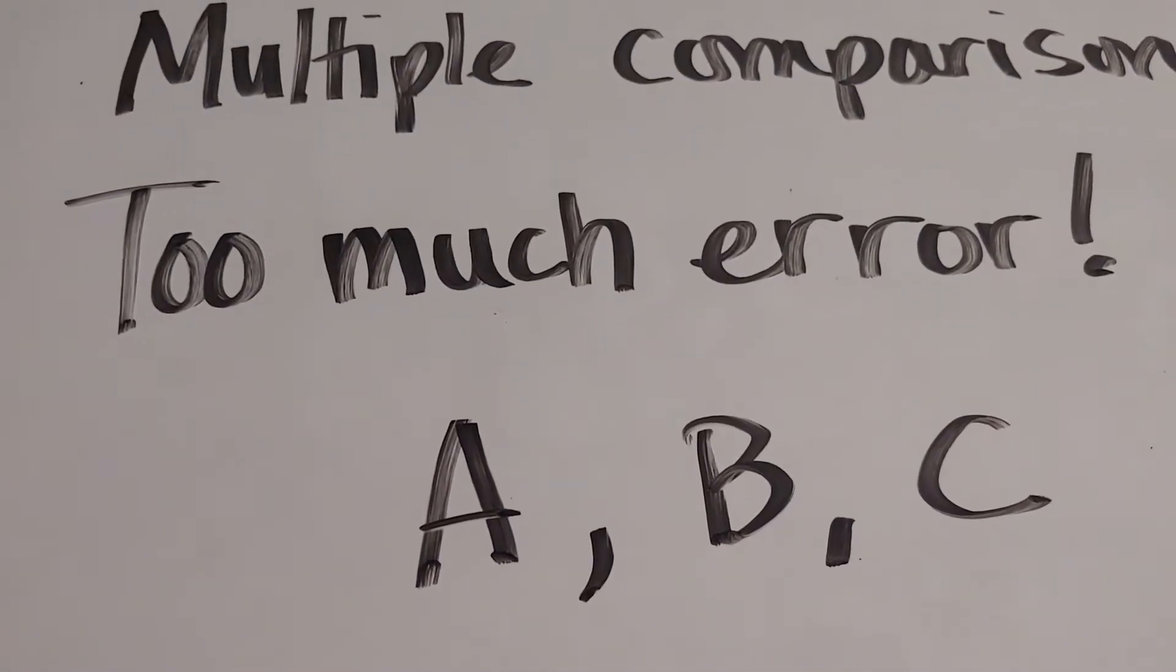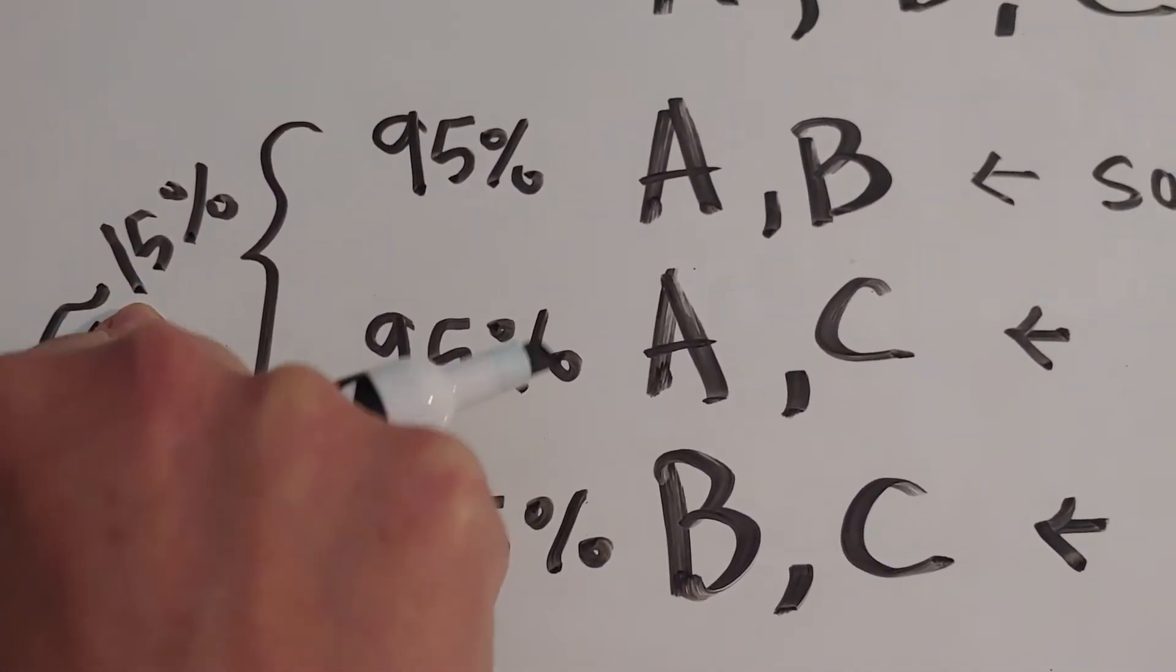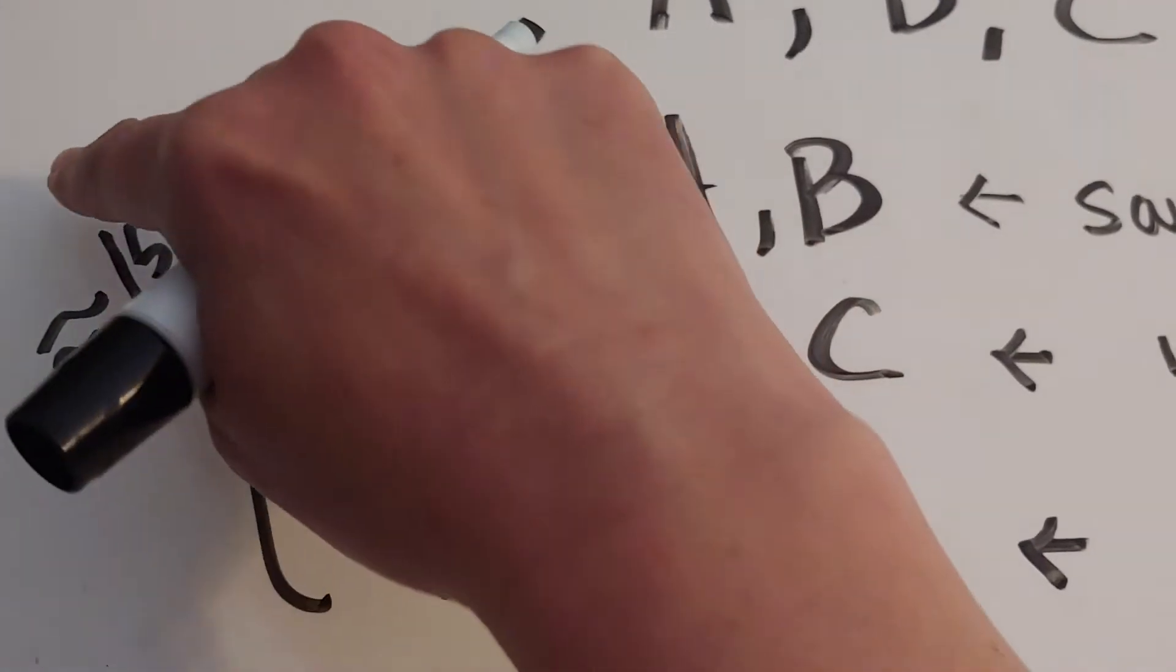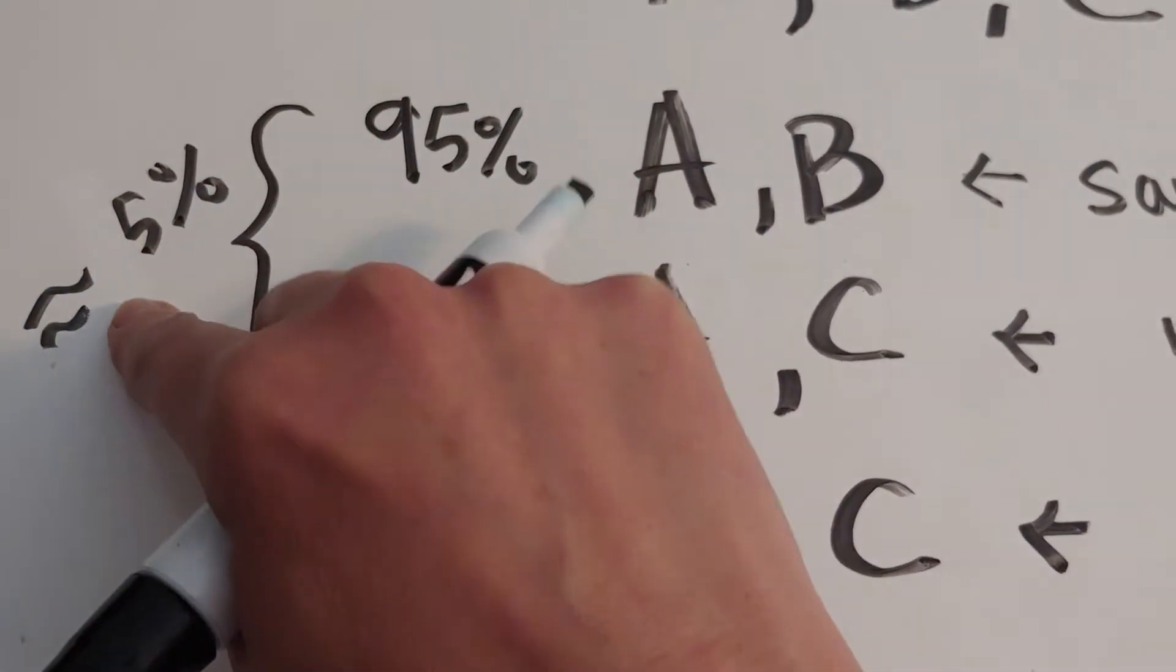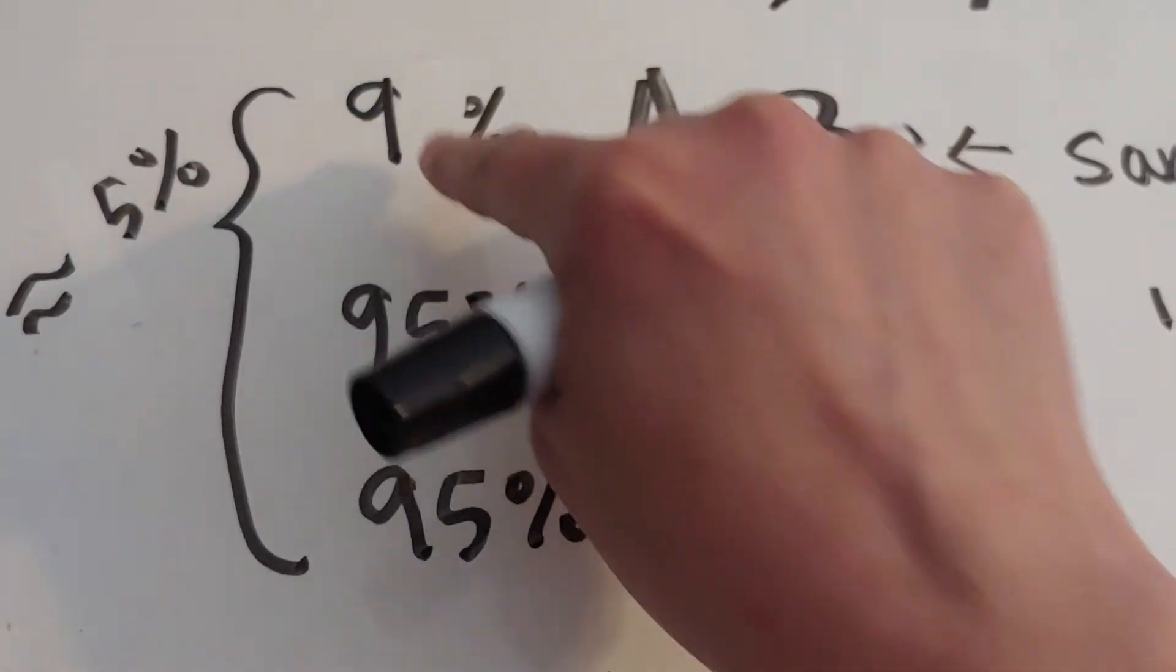That's why I started this off by saying too much error. Our solution to making sure that I only have a total of 5% is if I want a total of 5%, then I've got to raise up all of these individually.